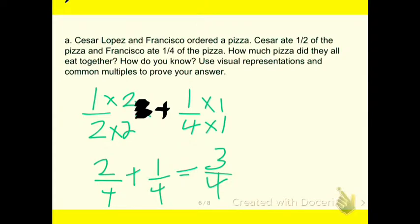And the first question is, Cesar Lopez and Francisco ordered a pizza. Cesar ate one half of the pizza and Francisco ate one fourth of the pizza. How much pizza did they all eat together? How do you know? Use visual representations and common multiples to prove your answer.